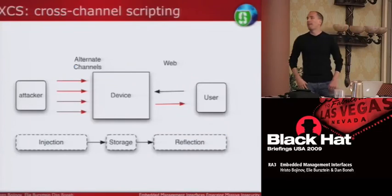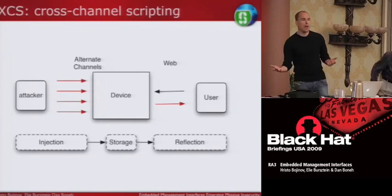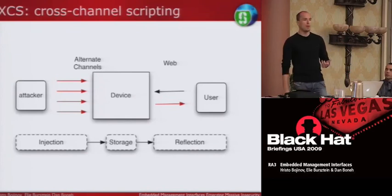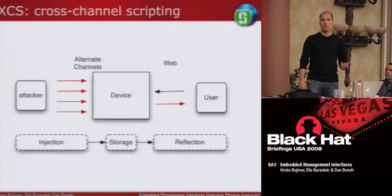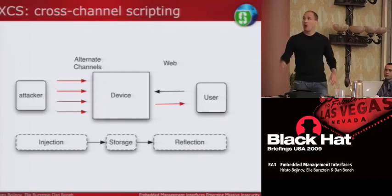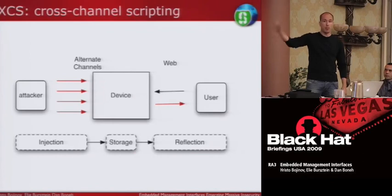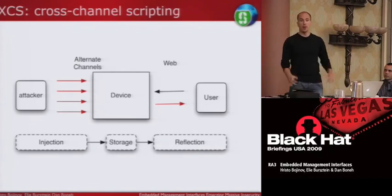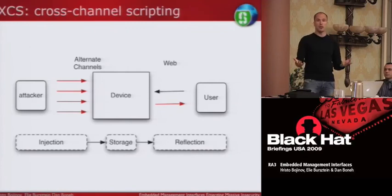More generally, XCS is the idea that you use any alternative channel you can find. Previous work has used DNS injection, DHCP name injection, SMTP injection, SNMP injection — you store them to the device somehow, and then they're reflected to the browser. What makes it a little different is that your web application itself is secure, your SNMP server is secure, your FTP server is secure — but the interaction between the two is not. And it's very hard to do this kind of test automatically or to spot some of the complex interactions that can occur.